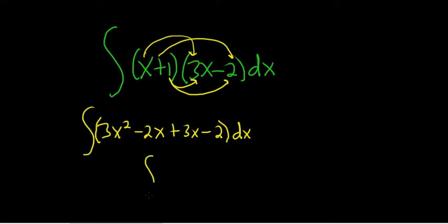This is equal to the integral, and then here you have 3x squared. Negative 2x plus 3x is just x, and then minus 2 dx. And now we're in a position where we can actually integrate this. We can use the power rule.